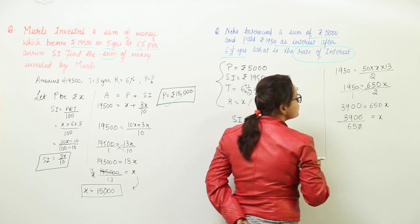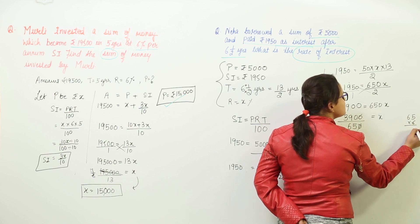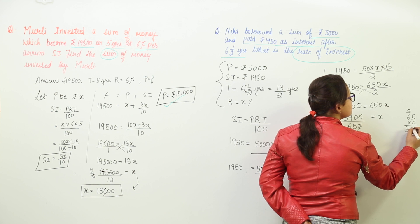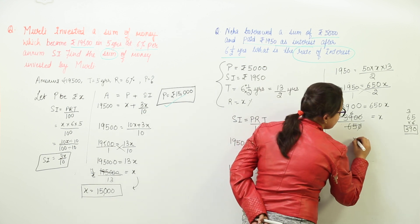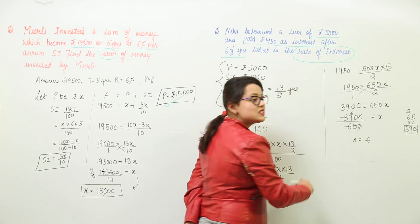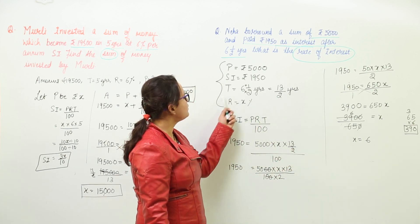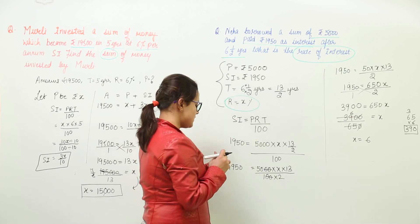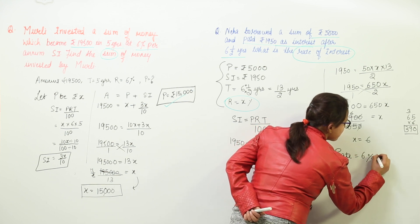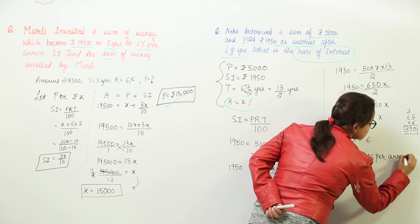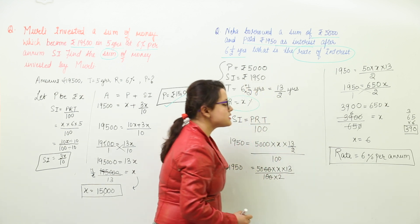Dividing 3,900 by 650: 65 × 6 = 390, so 650 × 6 = 3,900. Therefore x = 6. Since x was assumed to be the rate of interest, the rate of interest charged is 6% per annum.